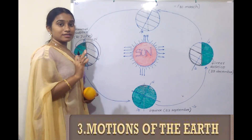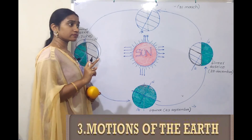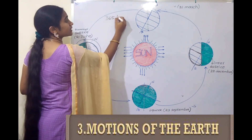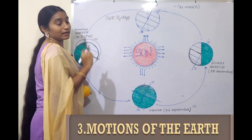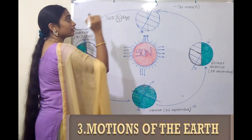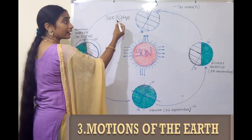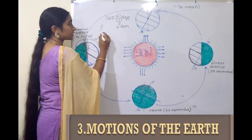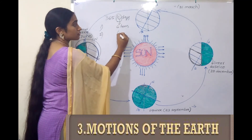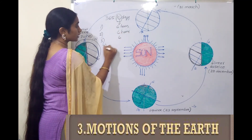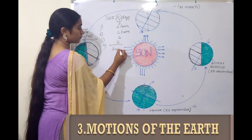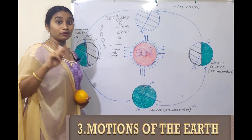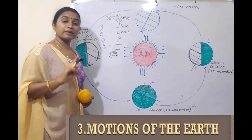The Earth rotates from west to east. The Earth revolves around the sun in 365 and one-quarter days. 365 days is one year, and one-quarter of a day equals 6 hours. In the first year, 6 hours; second year, 6 hours; third year, 6 hours; fourth year, 6 hours — totaling 24 hours, which equals 1 day. So in the fourth year, one extra day is added. February normally has 28 days, but in the fourth year it has 29 days. This is the leap year.